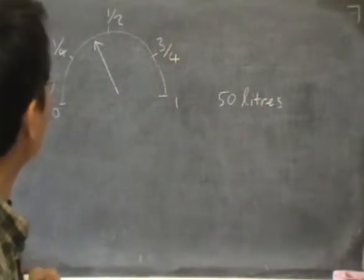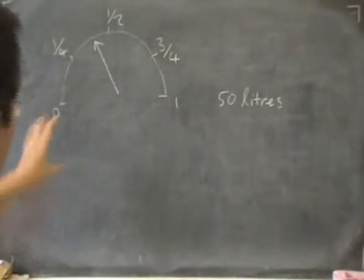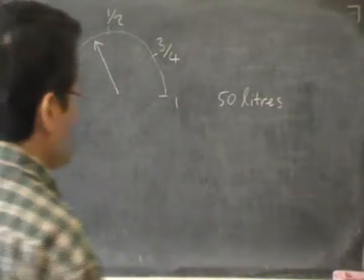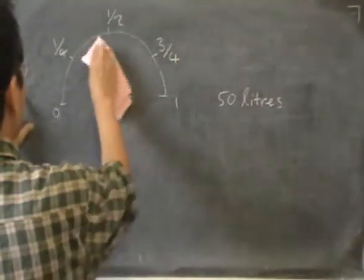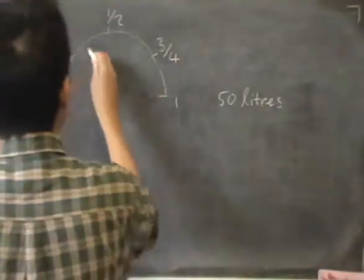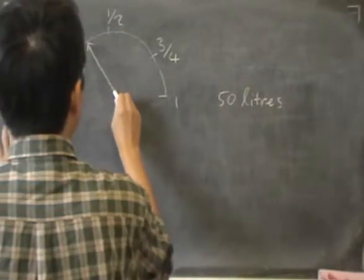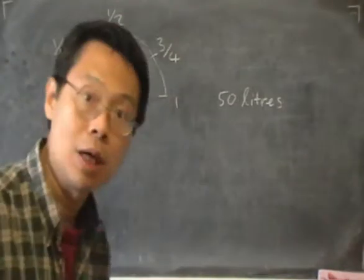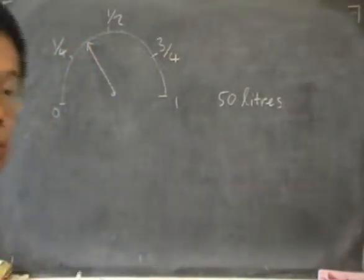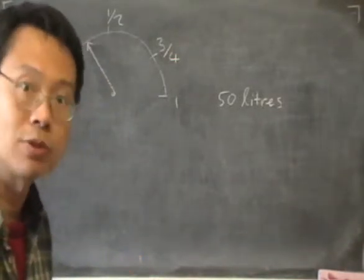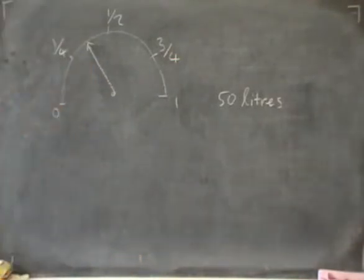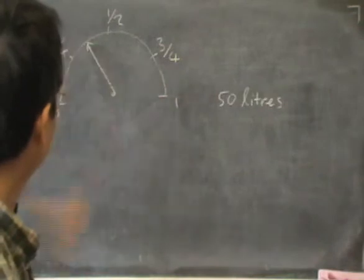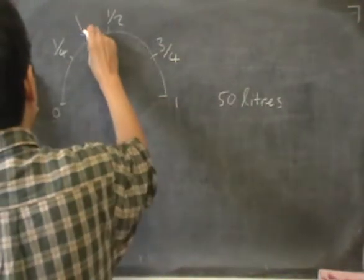Or if the petrol tank is completely empty, the needle will point to 0. But in this question, we have this dial showing the needle pointing to exactly halfway between a quarter and a half.